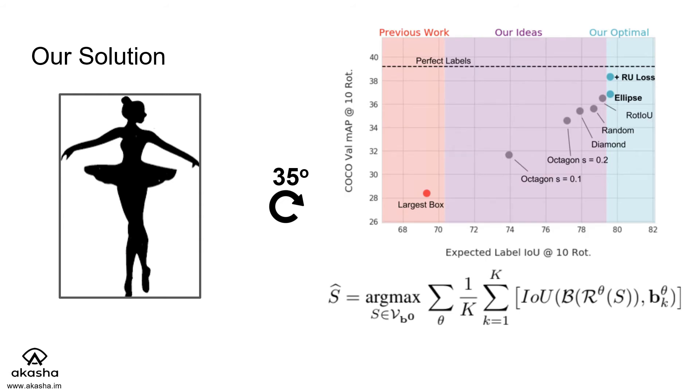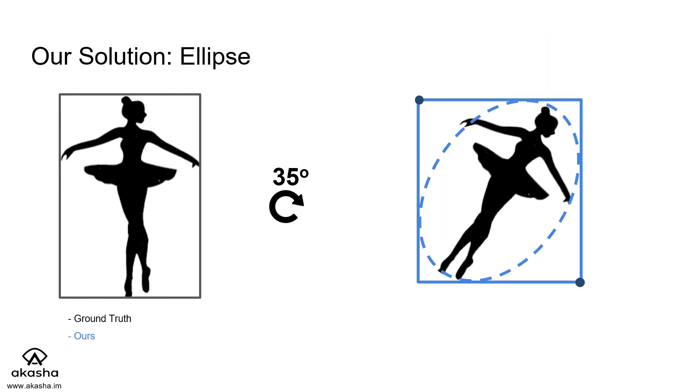To further validate this process, we tried many other priors and see that as the prior improves in expected IOU, it also improves in performance. This is the first part of our solution, taking the shape prior as an ellipse and rotating the box accordingly.